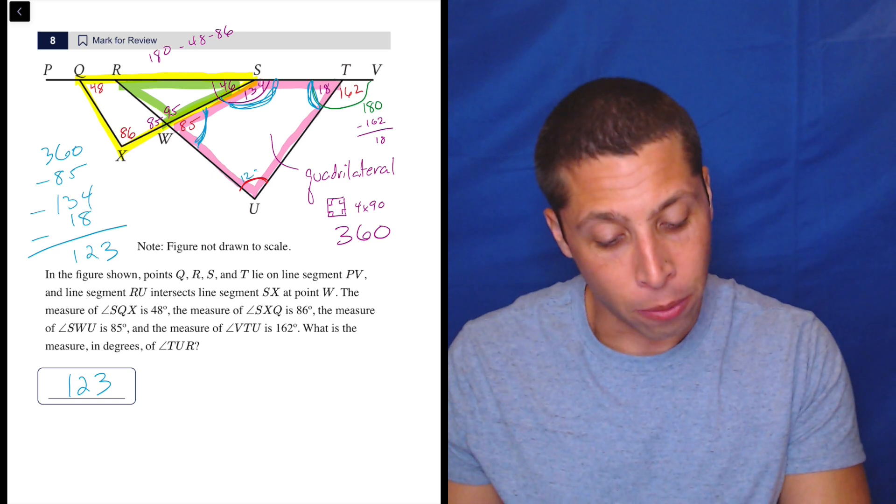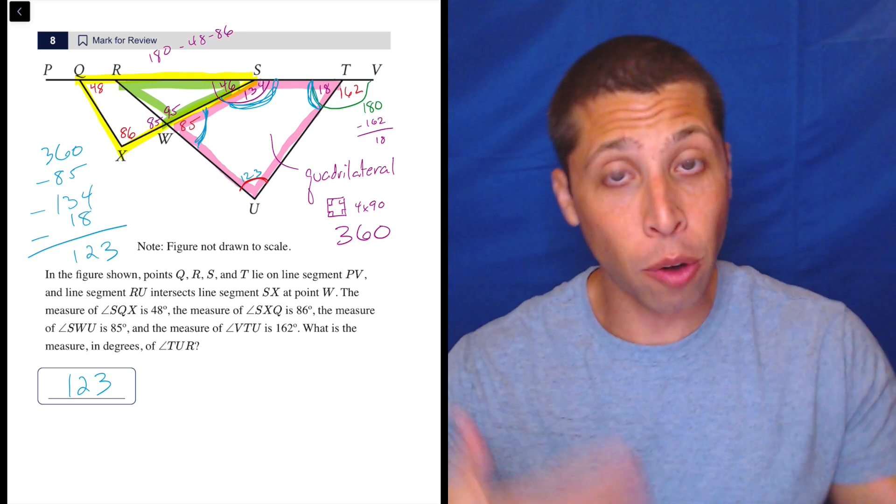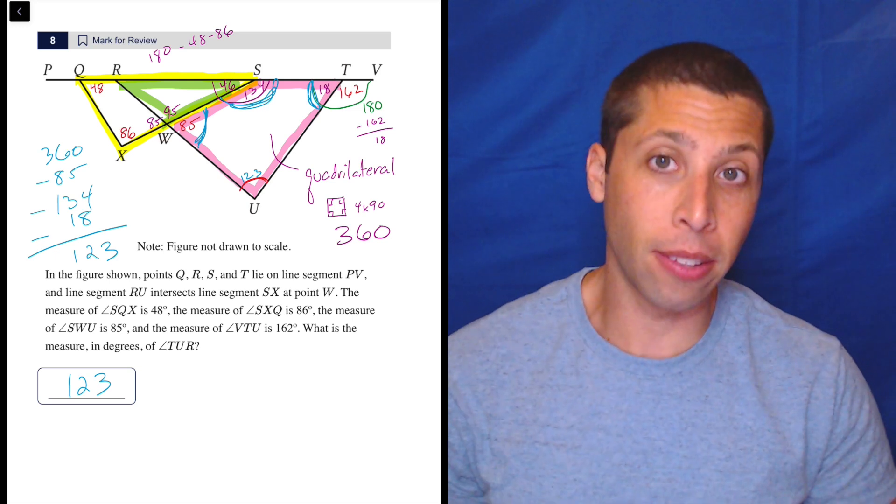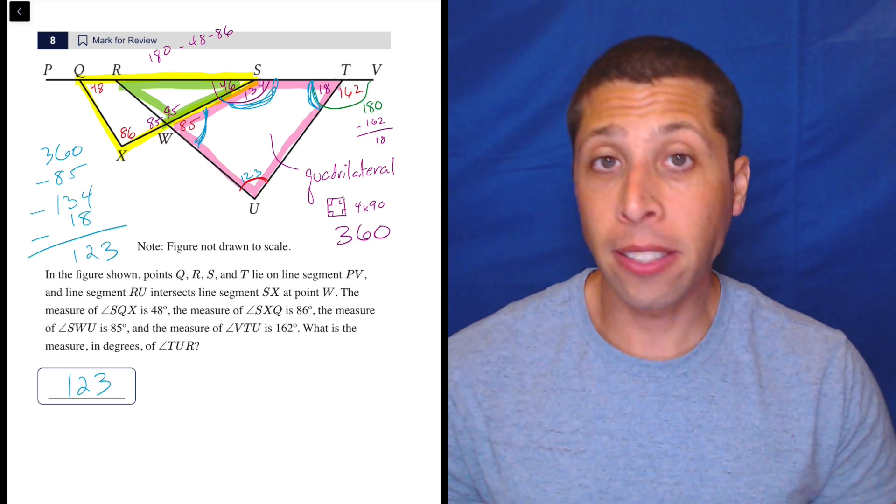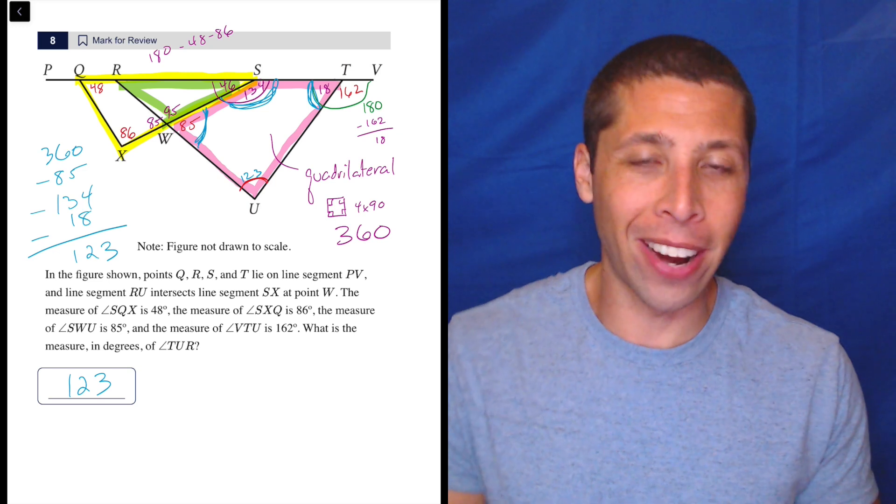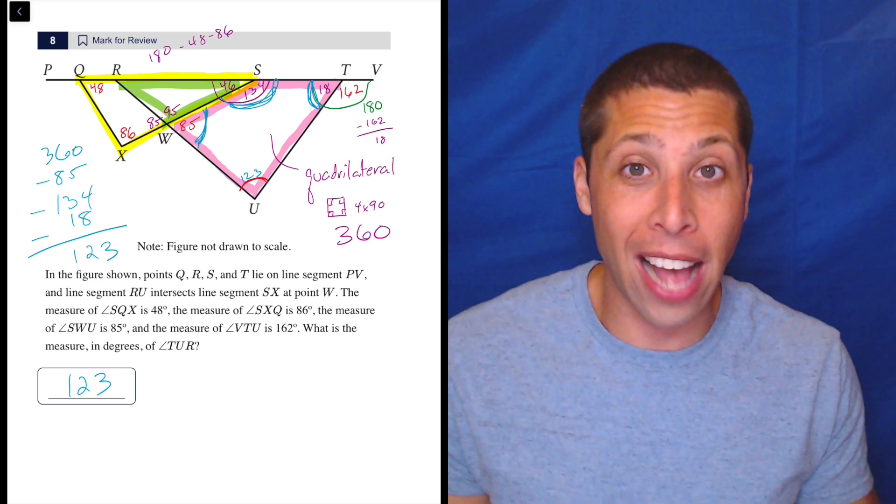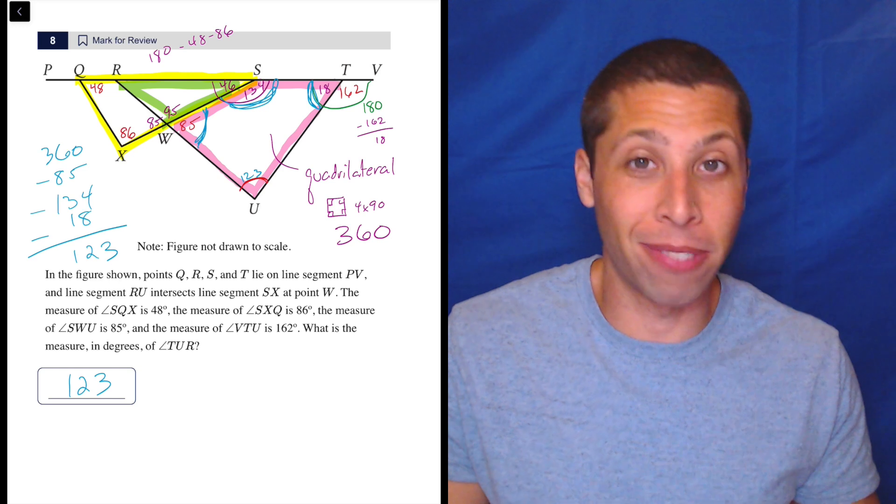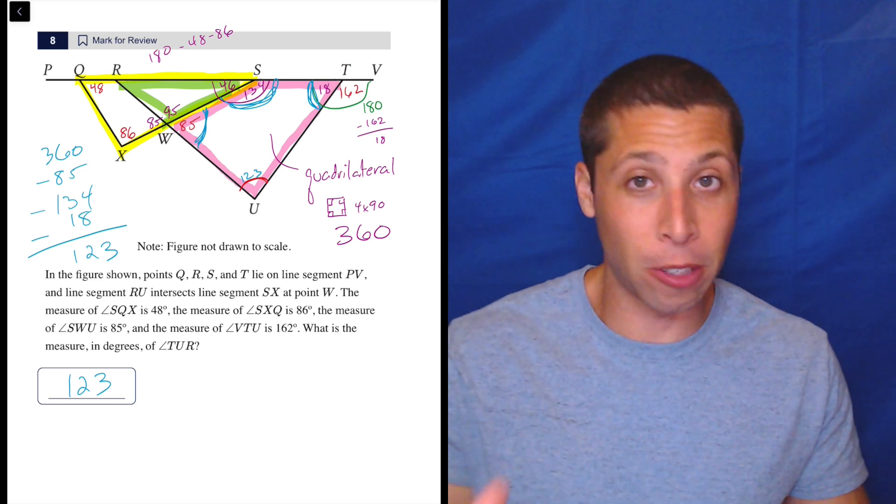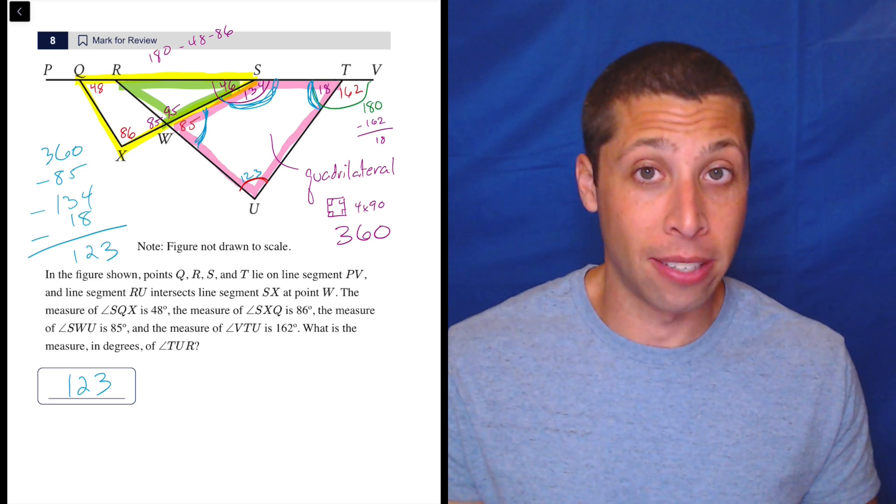Done. That's 123. So again, we could have done this in a couple more steps using the triangles, but I think that that quadrilateral thing is useful. And it doesn't matter that this is a four-sided shape that has no name to it. It's not a rectangle. I don't think it's a rhombus or anything like that. So it's just like a random set of four sides. Who cares? It doesn't matter if it's pretty like a square or messy like this. It's still got 360 degrees.